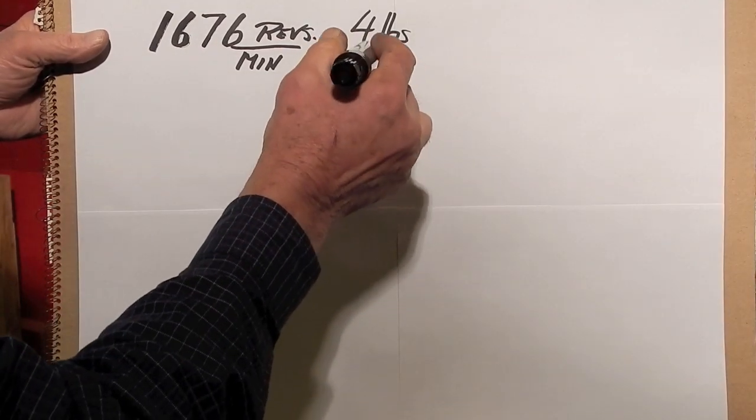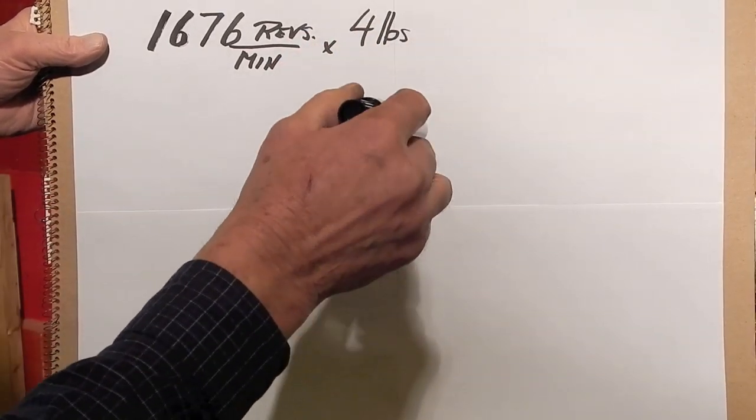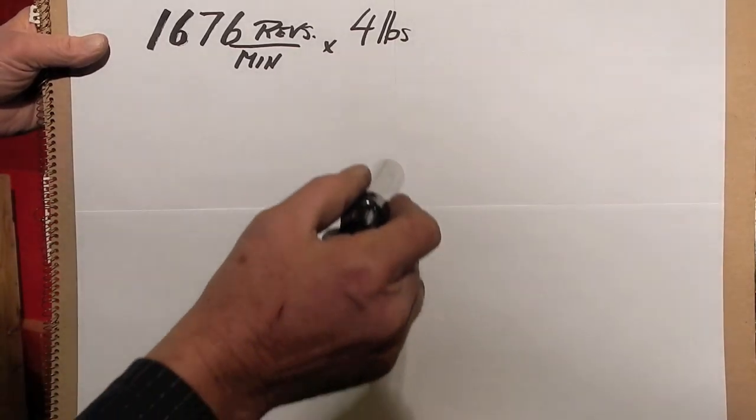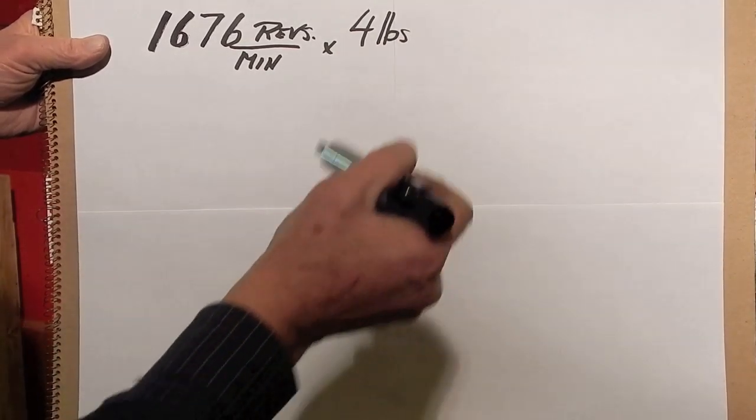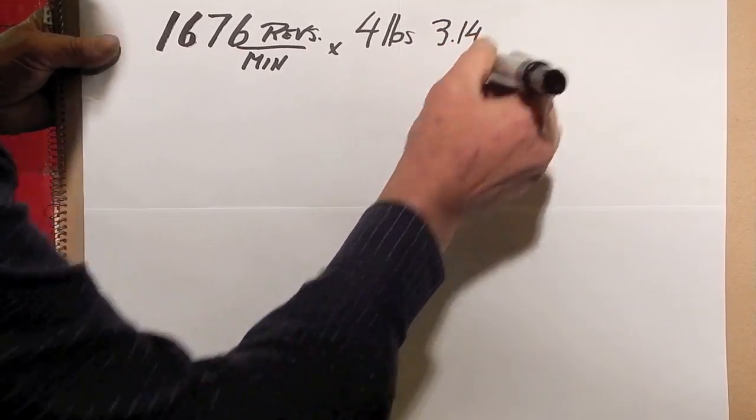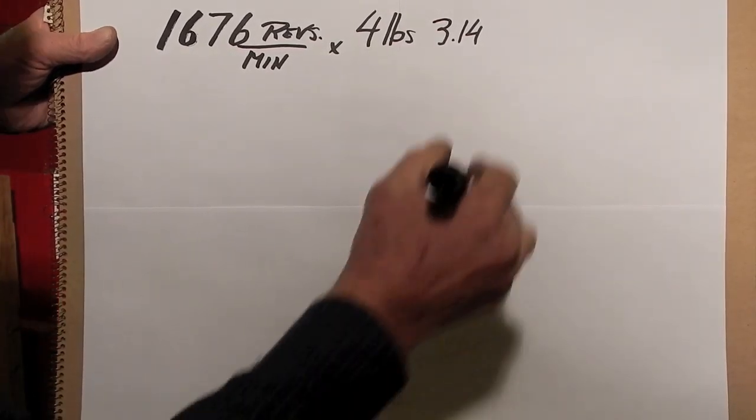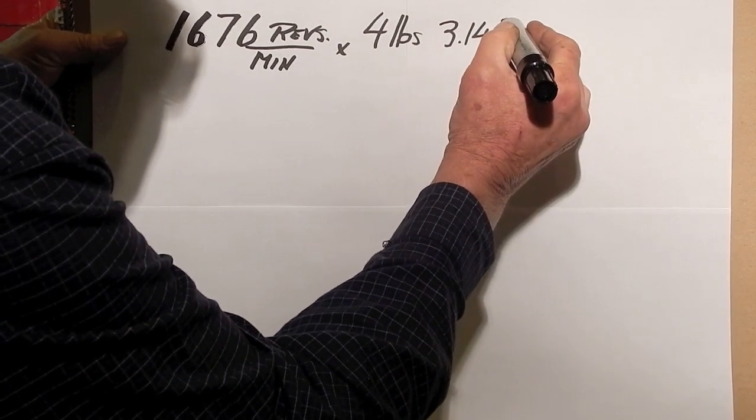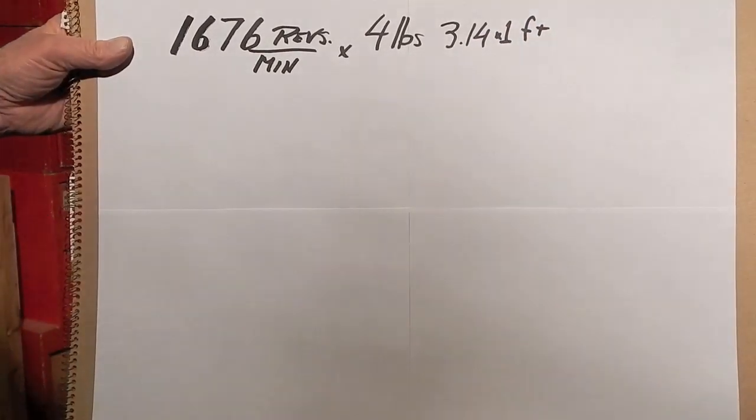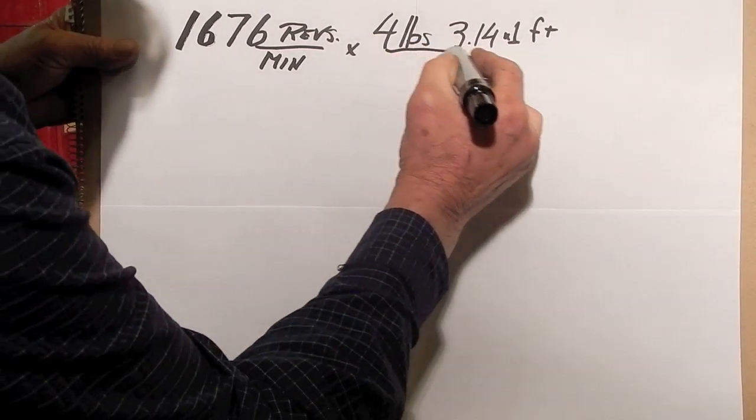During one revolution, that force, had it been a complete circle, would have traveled a distance of pi times the diameter. Pi, 3.14, times the diameter—because it's a six inch radius, it has a diameter of one foot. That's per each revolution.